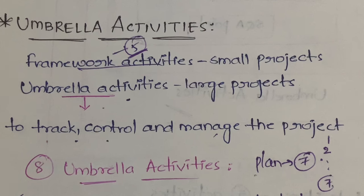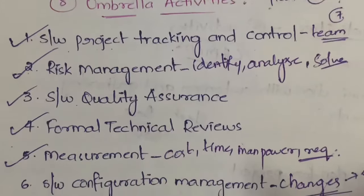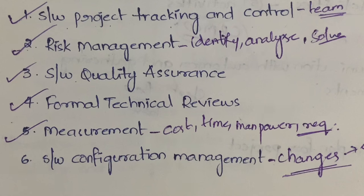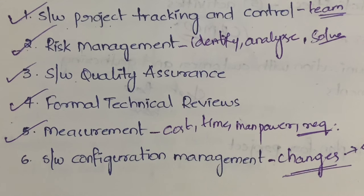These are the eight umbrella activities: software project tracking and control, risk management, software quality assurance, formal technical reviews, measurement, software configuration management, reusability management, and work product preparation and production. After this topic, we have CMMI — Capability Maturity Model Integration — for which I've already done a video in the management sciences playlist.